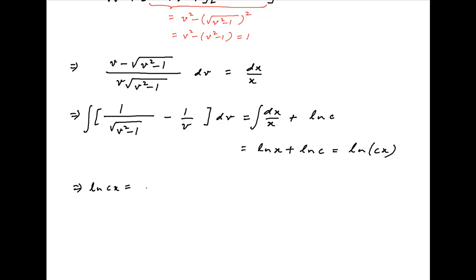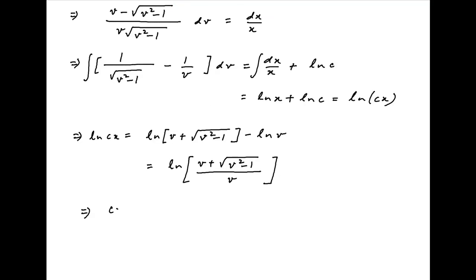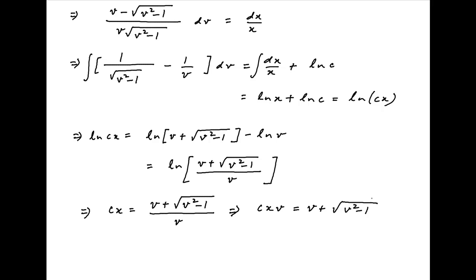Therefore we get ln(cx) equal to ln of v plus the square root of v squared minus 1 minus ln(v), which equals ln of the quantity v plus the square root of v squared minus 1, divided by v. This implies cx equals v plus the square root of v squared minus 1, upon v. Cross multiplying gives cxv equals v plus the square root of v squared minus 1.